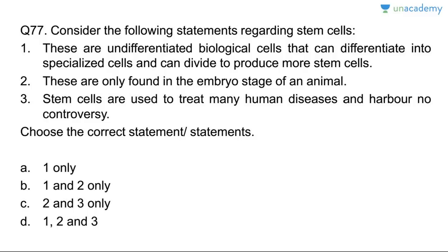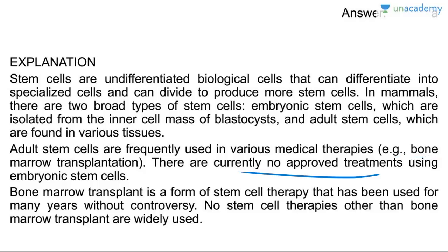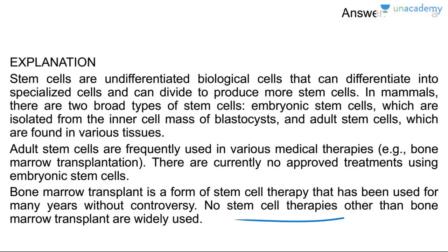Question seventy-seven: stem cells. These are undifferentiated biological cells that can differentiate into specialized cells and divide to produce more stem cells. In mammals, there are two broad types: embryonic stem cells isolated from the inner cell mass of the blastocyst, and adult stem cells found in various tissues. Adult stem cells are frequently used in medical therapies like bone marrow transplantation. There are currently no approved treatments using embryonic stem cells.